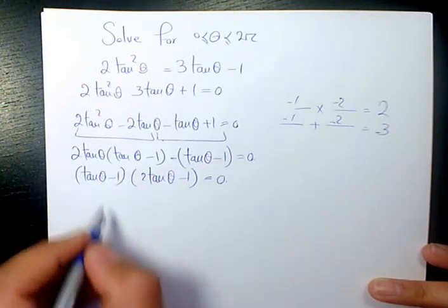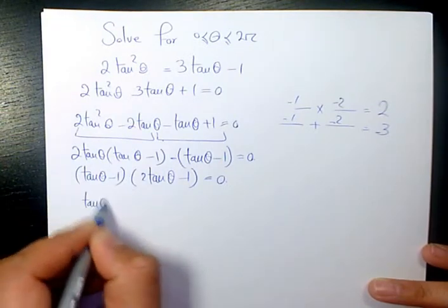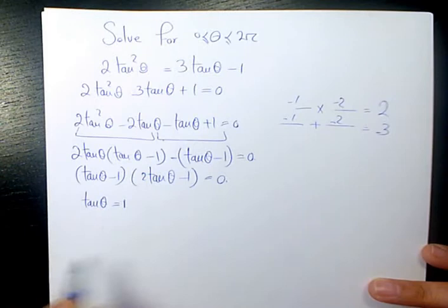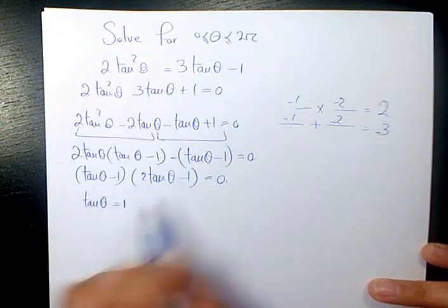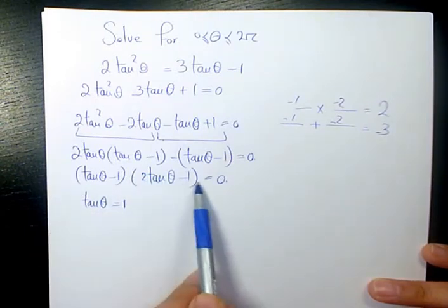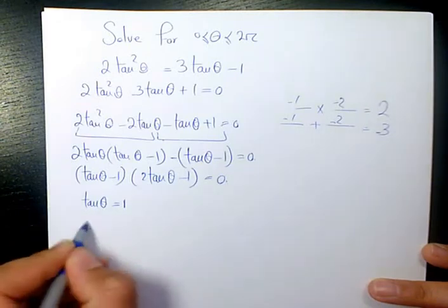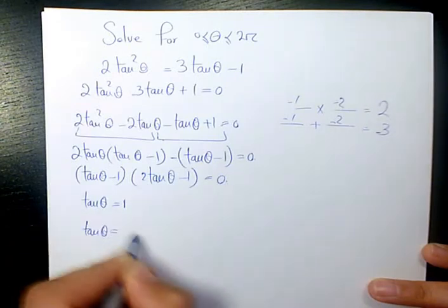Now we have 2 scenarios. One: tan θ - 1 = 0 or we can say tan θ = 1, and another one is going to be 2 tan θ - 1 = 0 which means that tan θ is 1/2.